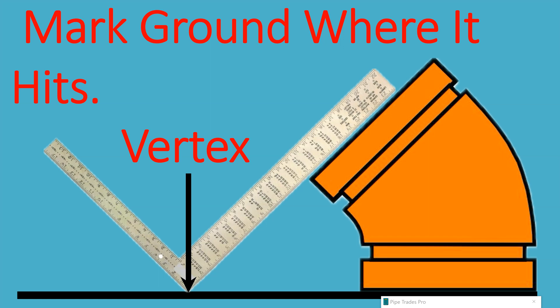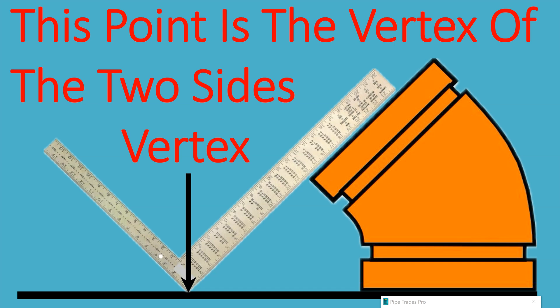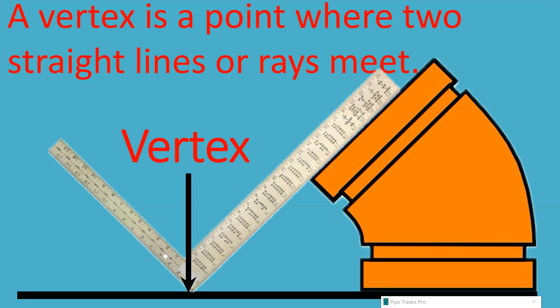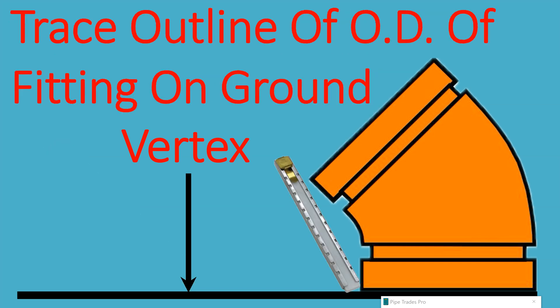So mark the ground where it hits the fitting - soapstone, pencil, marker. Where it hits the ground, we're going to mark it. We're going to call that the vertex. This point is the vertex of the two sides. A vertex is a point where two straight lines or rays meet. Trace or outline the OD of the fitting on the ground. In this case, we're using a soapstone holder. Don't move the fitting. We need that vertex mark. You'll see it in the next slide.